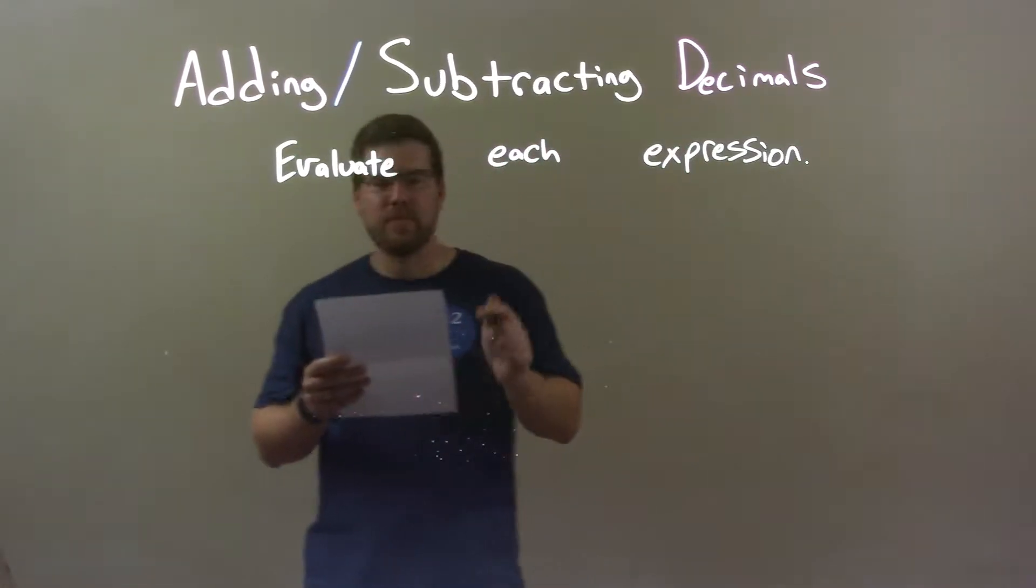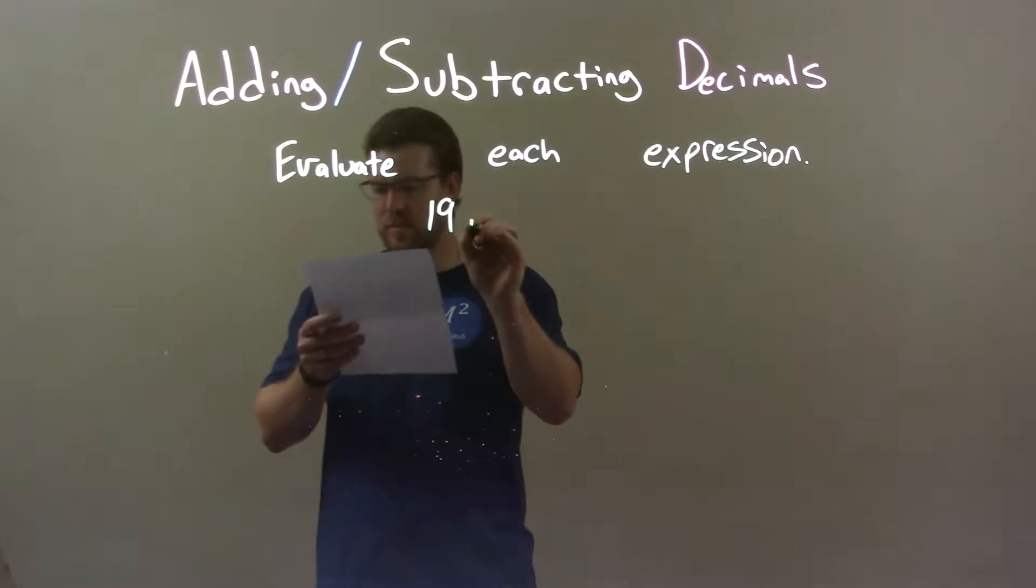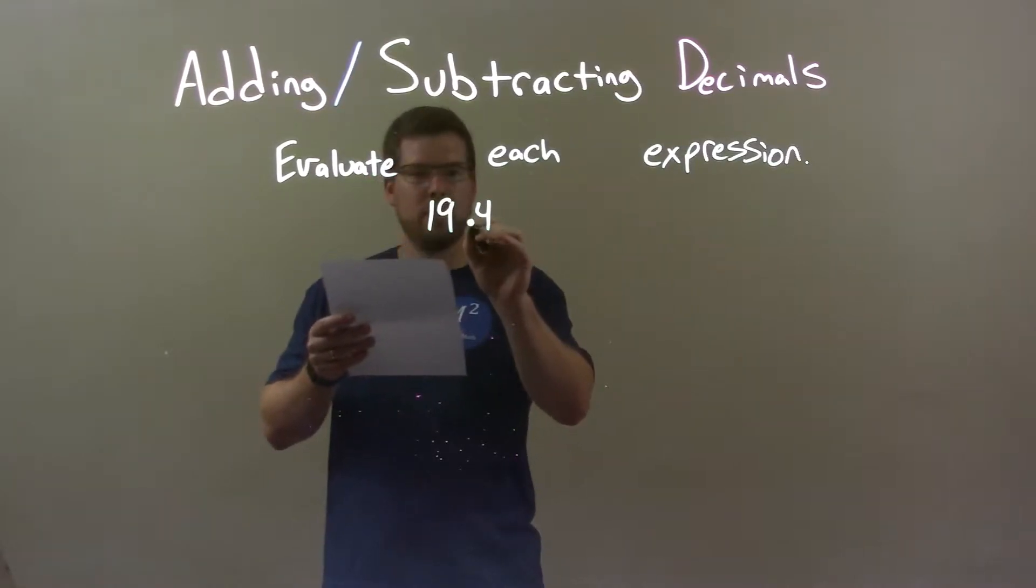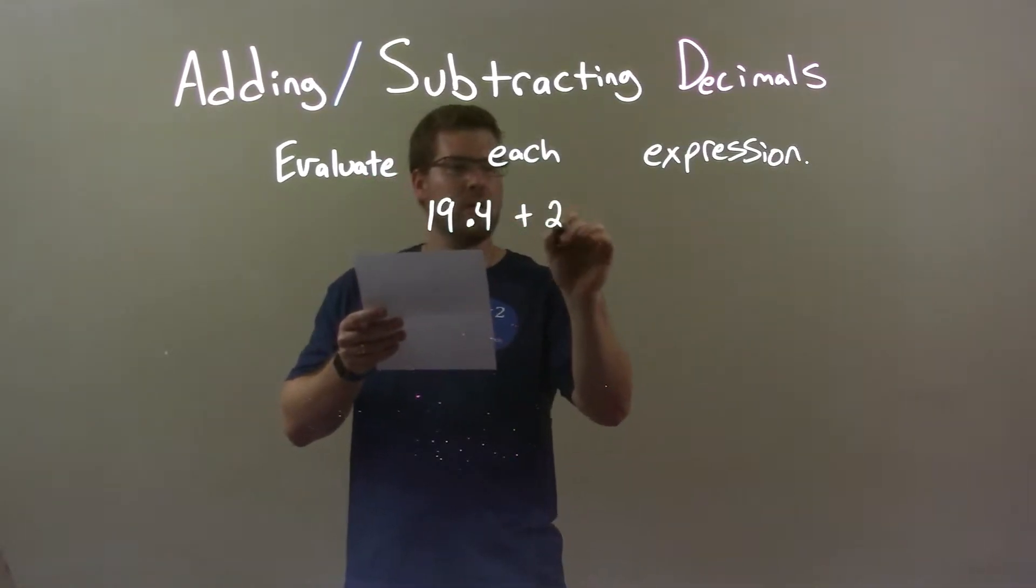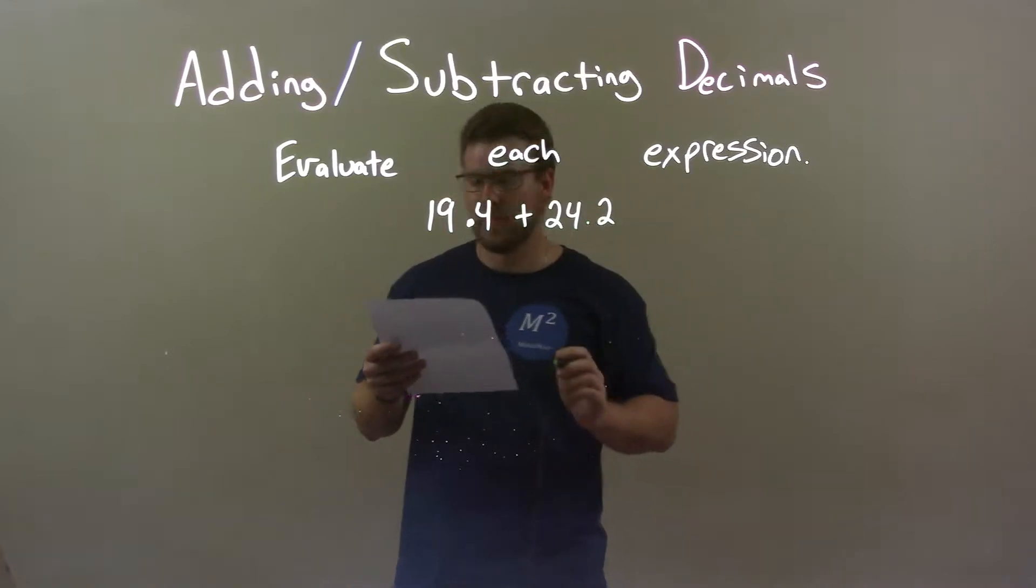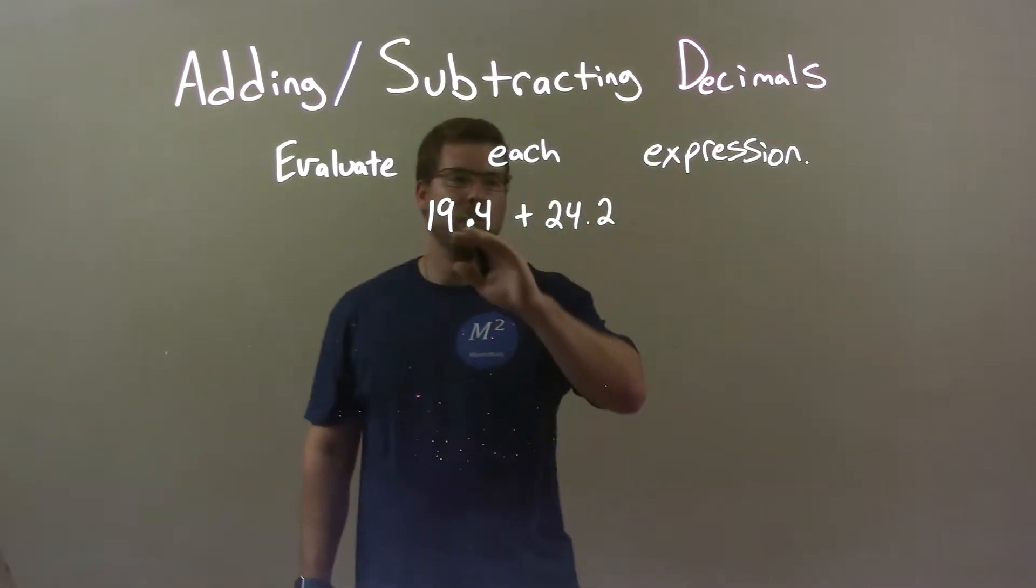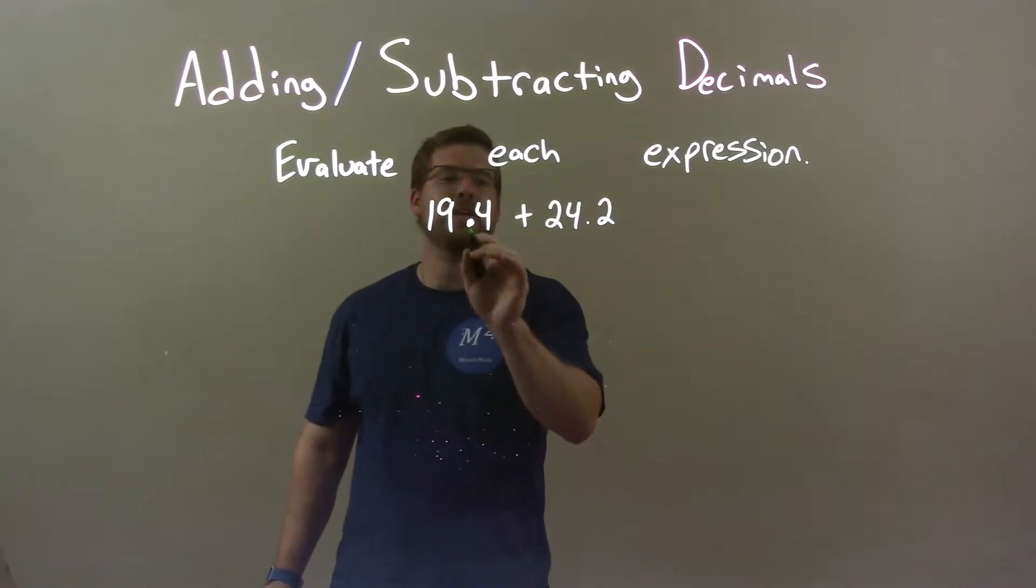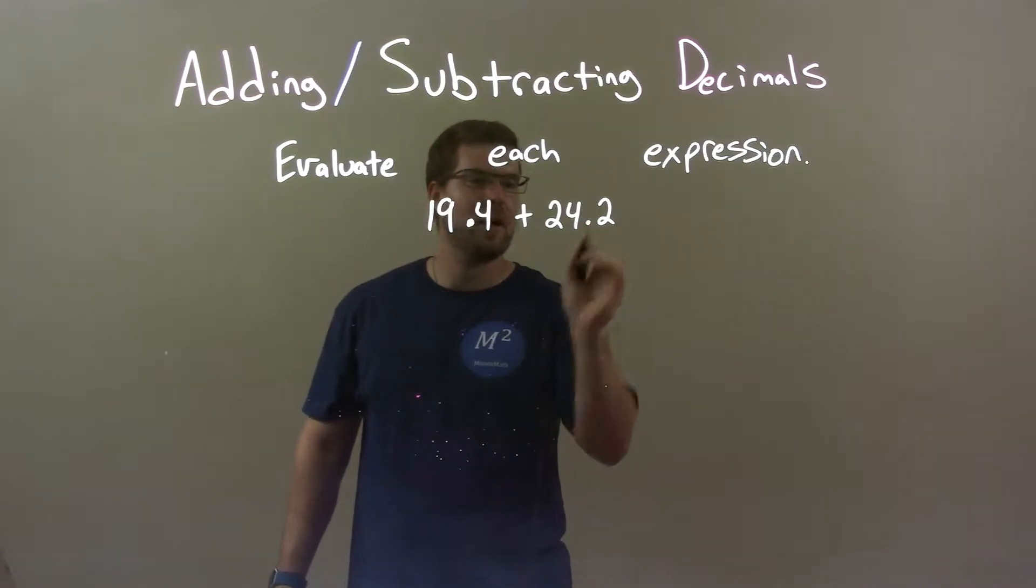So if I was given this expression, 19.4 plus 24.2, to just add these up, I'm going to put one over the other. I just have to make sure the decimals are lined up.